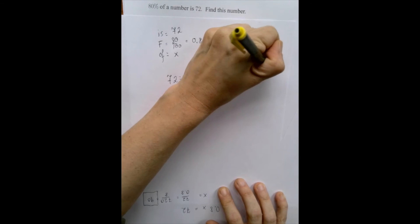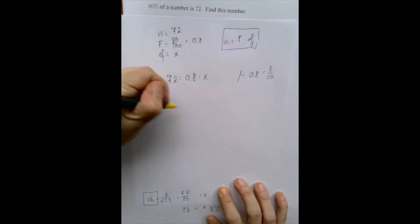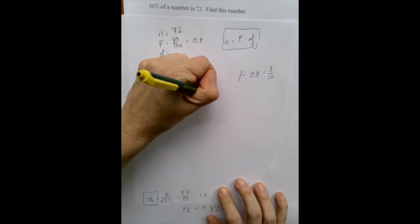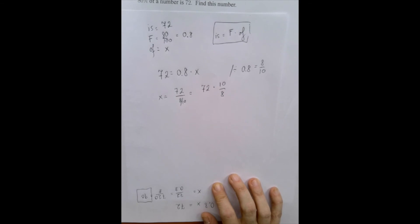Which is the same as 8 over 10. And so x is going to be 72 divided by 8 over 10. And to divide is to multiply by the reciprocal. So we have 72 times 10 over 8.